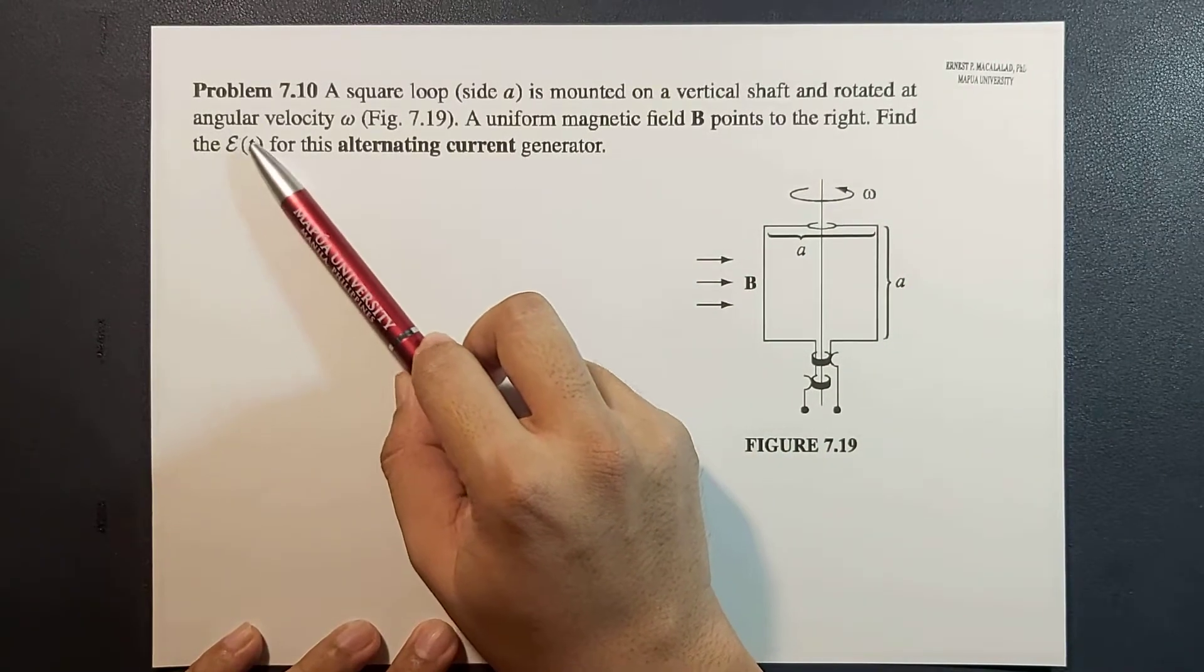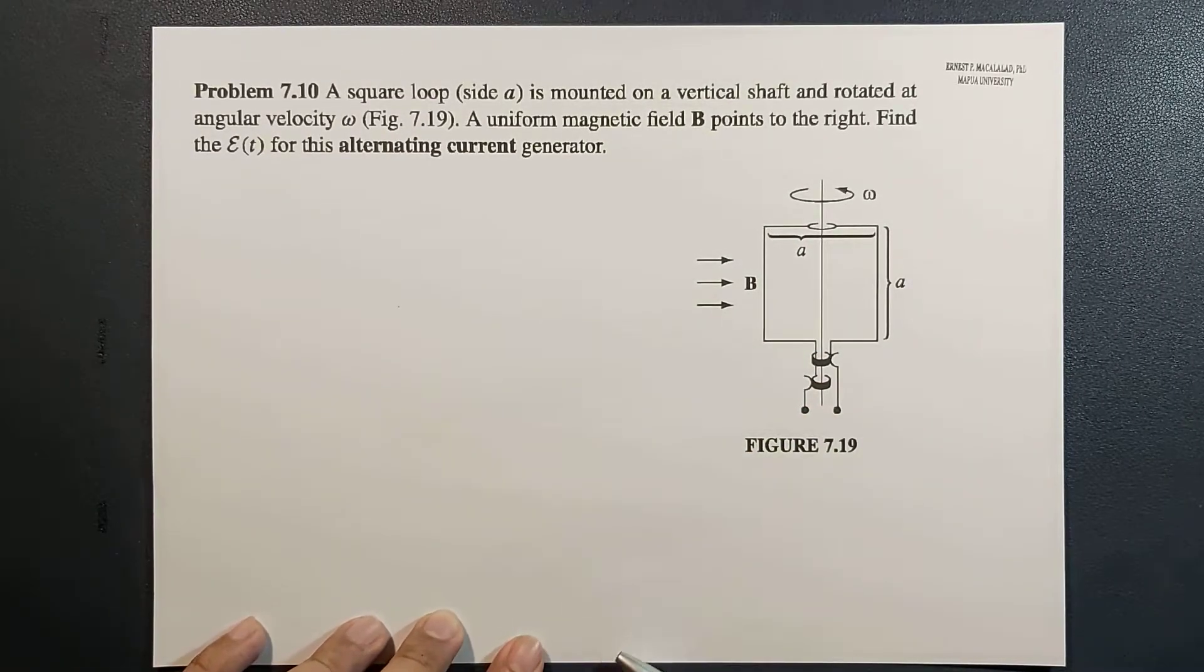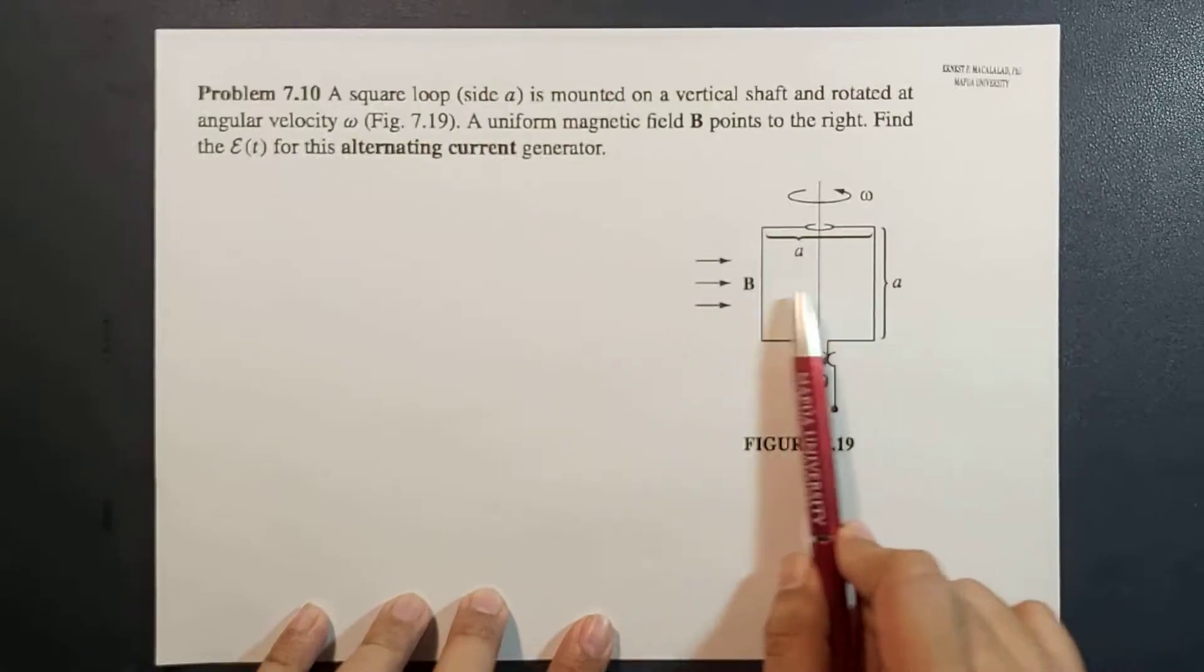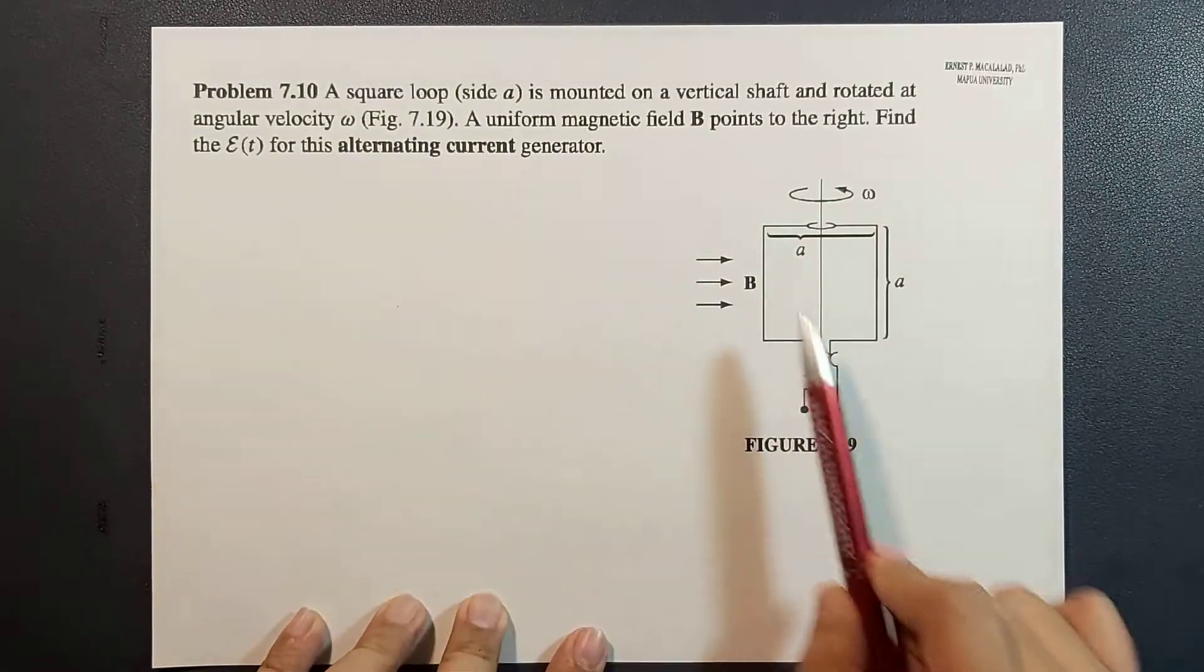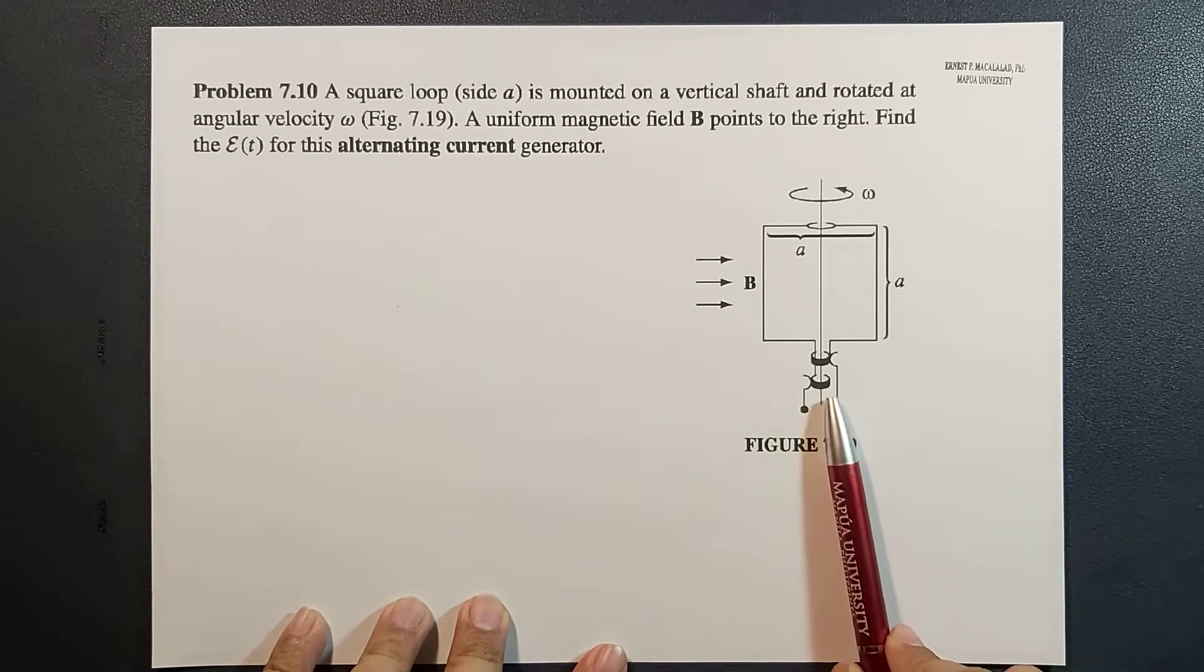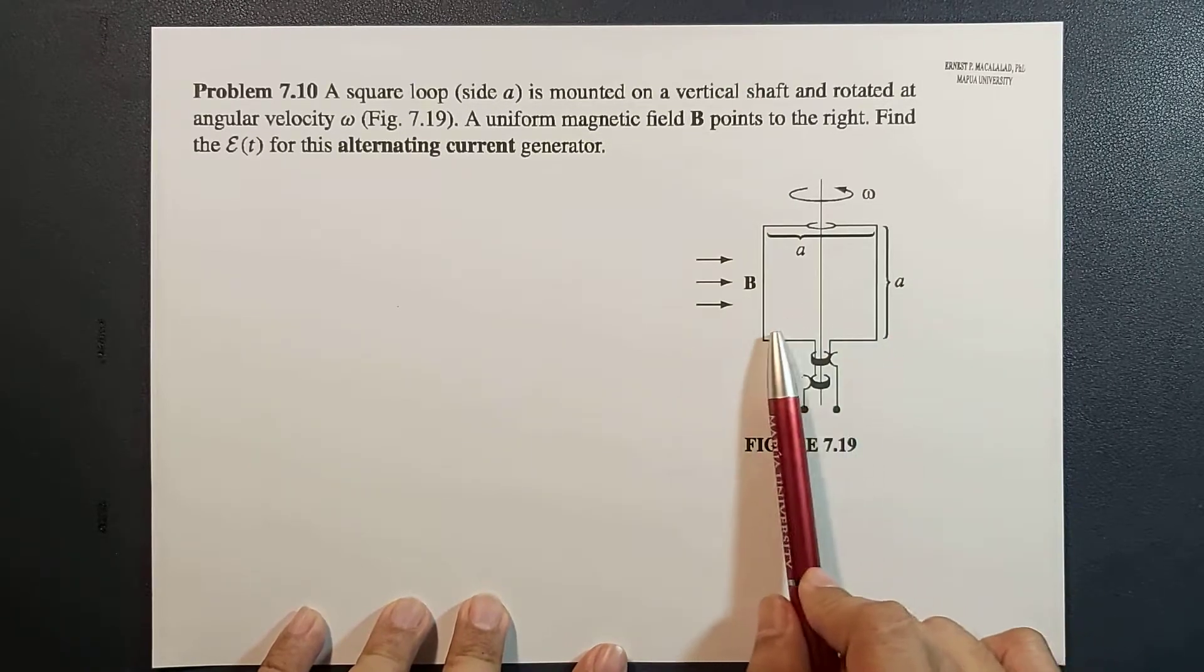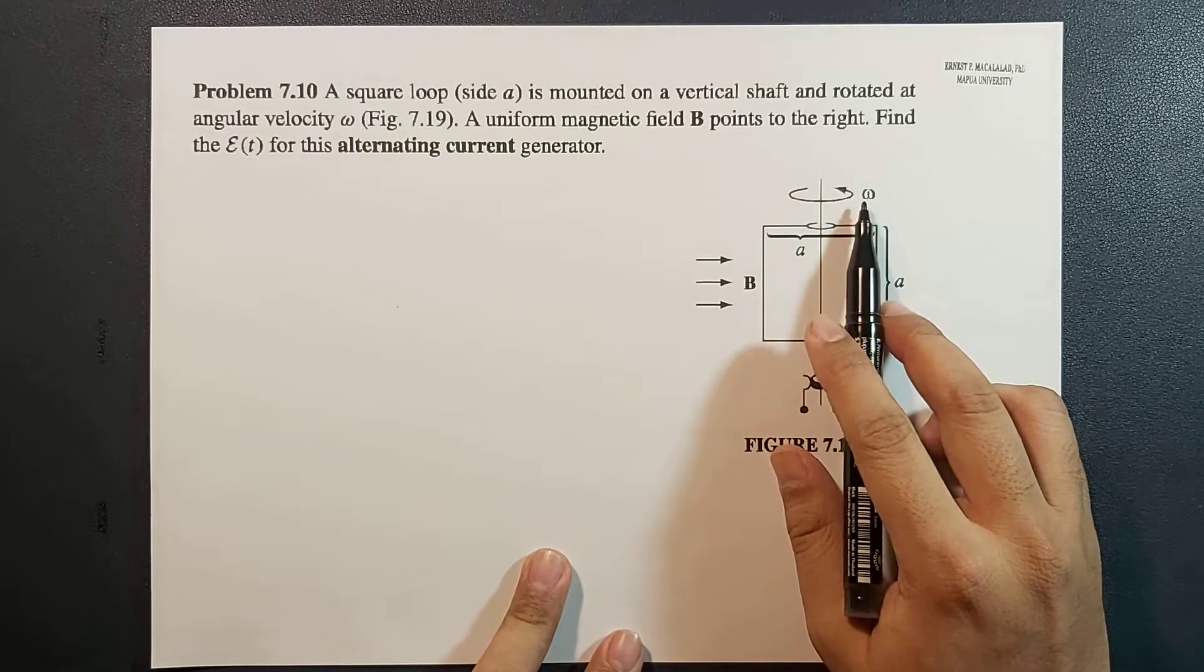Let's look at the figure first. So this is your square loop where each side is a, the magnetic field is to the right, and the direction of the rotation is in this direction. So if you have an alternating current generator, that means the direction of the current will remain the same regardless of the orientation of the loop. Now in this case, the omega will be a constant.